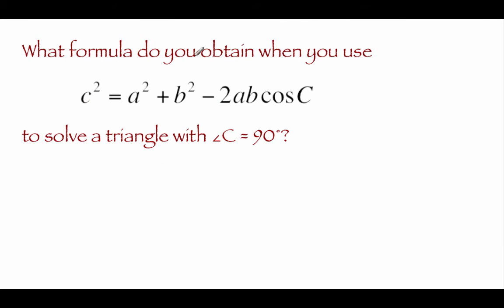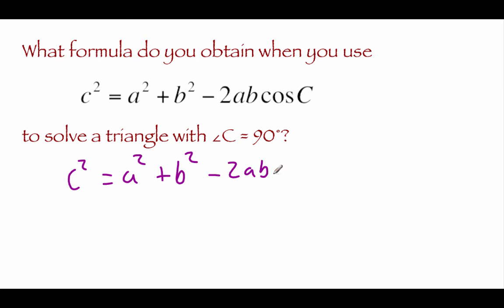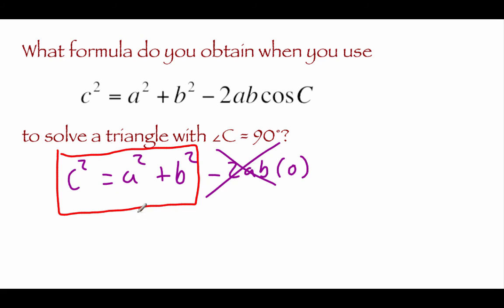If we had two sides — side A and side B — and wanted to find side C using the law of cosines, we'd need to know angle C. If angle C were 90 degrees, the cosine of 90° is just 0, so the term 2 times A times B times cosine of C cancels out entirely. What we're left with is C squared equals A squared plus B squared — which we should all recognize as the Pythagorean theorem.